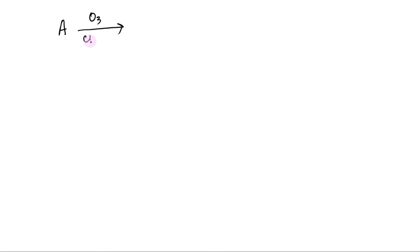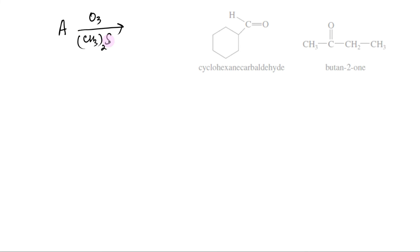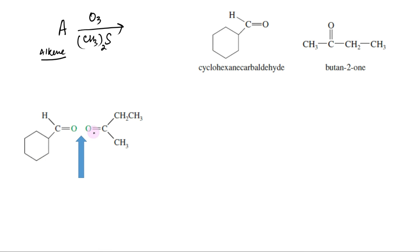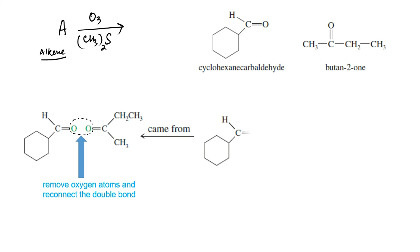Consider ozonolysis followed by reduction of an unknown alkene. It gives an equimolar mixture of cyclohexane carbaldehyde and 2-butanone. We can determine the structure of the original alkene by removing the two oxygen atoms of the carbonyl groups and connecting the remaining carbon atoms with a double bond. One uncertainty remains, however — the original alkene might be either of two possible geometric isomers.